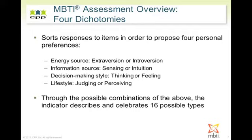A person with ESTJ preferences, for example, would have an initiating and outgoing way of approaching the world — that is, extroversion. They would have a pragmatic, fact-based approach to collecting information — that is, sensing — and a logical, impartial way of making decisions and seeking closure. That ESTJ set of preferences presents a certain style, strengths, and may even suggest some possible blind spots for a person with ESTJ preferences. So that's the very basics of the MBTI.